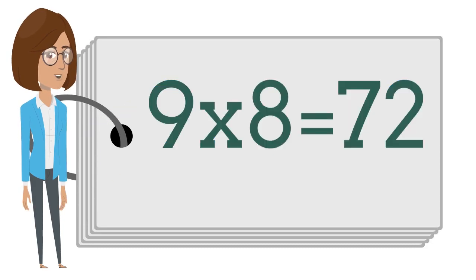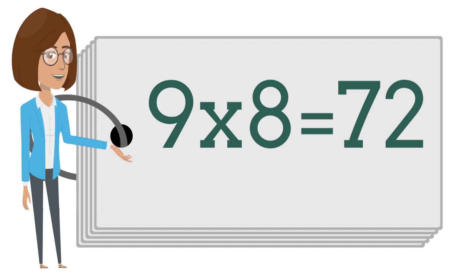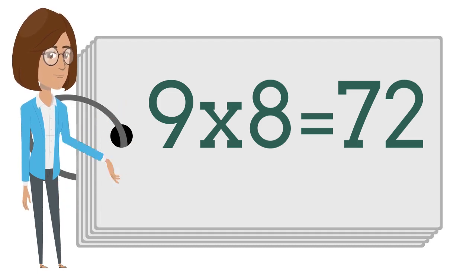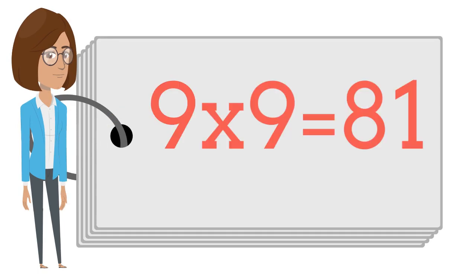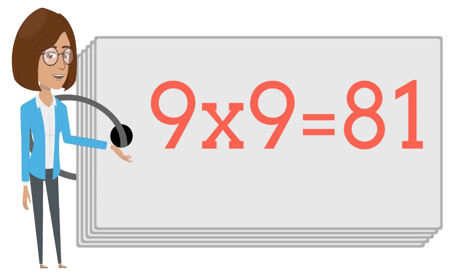Nine times eight is seventy-two. Nine times nine is eighty-one.